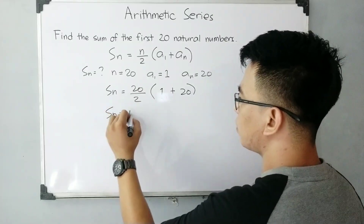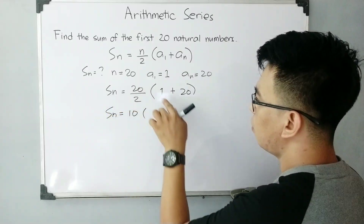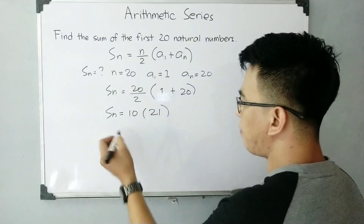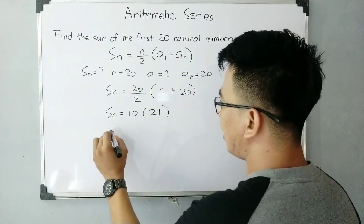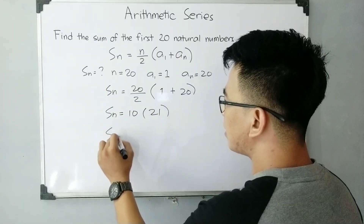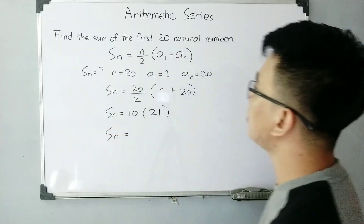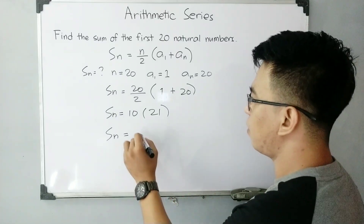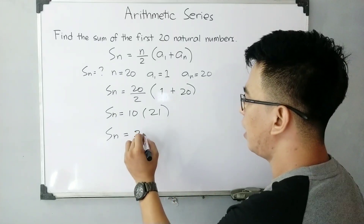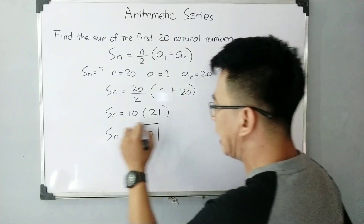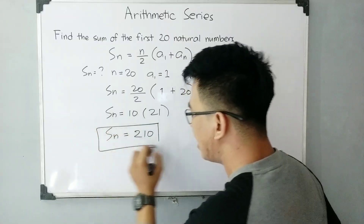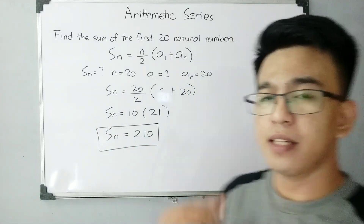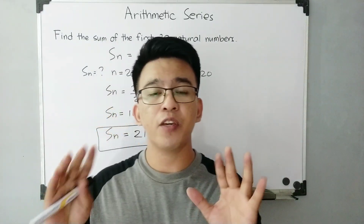Simplifying, S sub n = 10 times (1 + 20), which is 10 times 21. As you can see, this formula is very straightforward. The sum of the first 20 natural numbers is equal to 210. That is the answer for this problem.